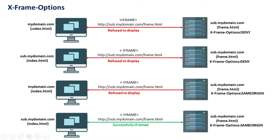For example, if mydomain.com/index.html is iframing sub.mydomain.com/frame.html and frame.html sets X-Frame-Options to deny, then index.html can't iframe that URL — it will refuse to display. Similarly, if sub.mydomain.com/index.html tries to iframe frame.html from the same domain sub.mydomain.com, and X-Frame-Options is deny, it is again refused to display regardless of domain.